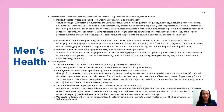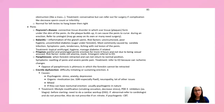Testicular torsion is very important and tested on frequently because missing it can cause permanent testicular damage within six hours. It's a twisting of the spermatic cord. The patient presents with sudden unilateral testicular pain, nausea, and vomiting. Get an ultrasound right away — this is an immediate referral to the ED.